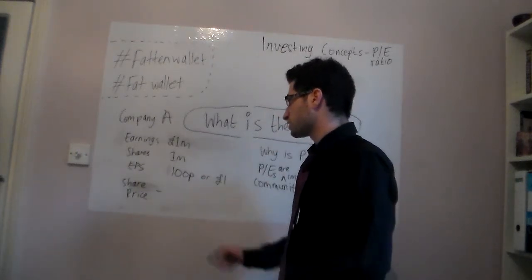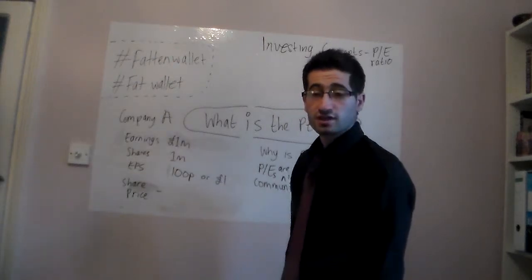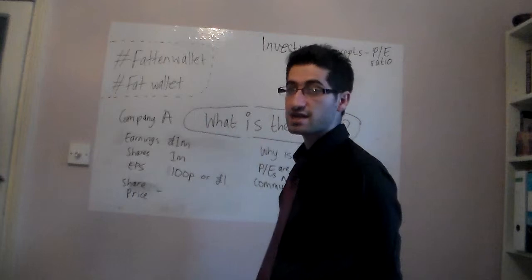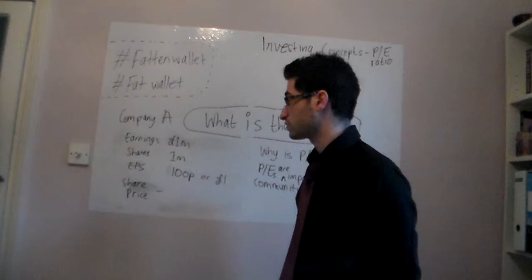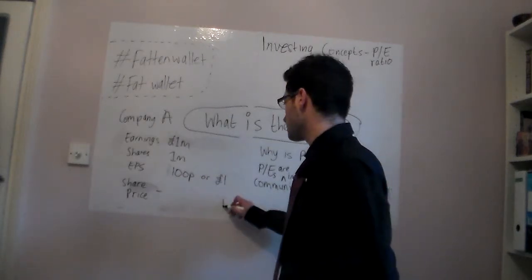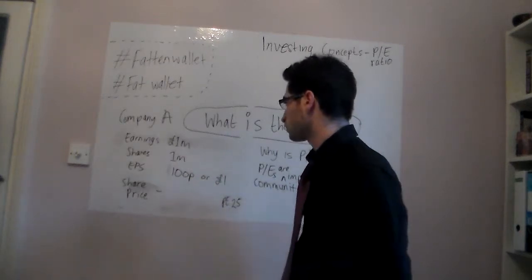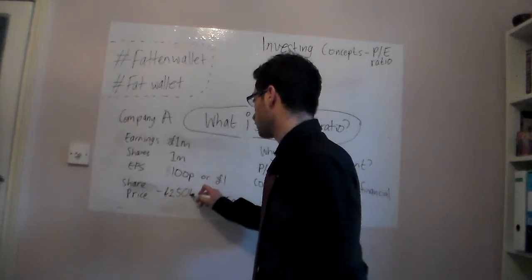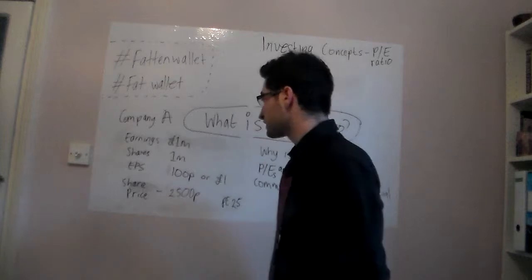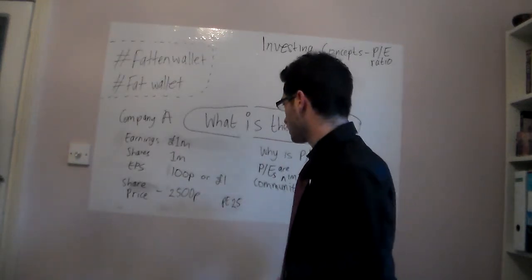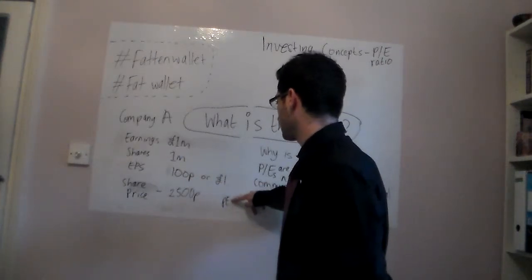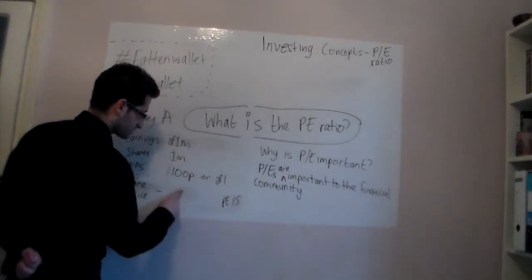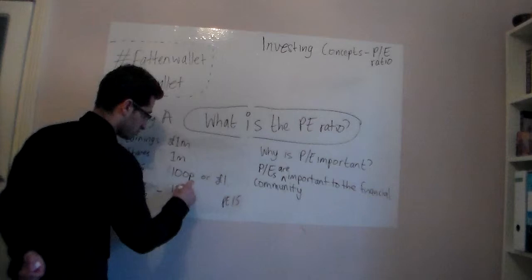So the PE is basically the earnings per share divided by the current share price. The share price is dependent on a lot of factors. Let's just say that the financial community sees Company A as a fast-growing company — they might give this company a high share price, a PE of 25, which would mean £25, or 2,500 pence. If it's considered a slow grower or not very attractive, then maybe the PE would be lower at 15 — in that case, 15 times the earnings would be £15, or 1,500 pence.